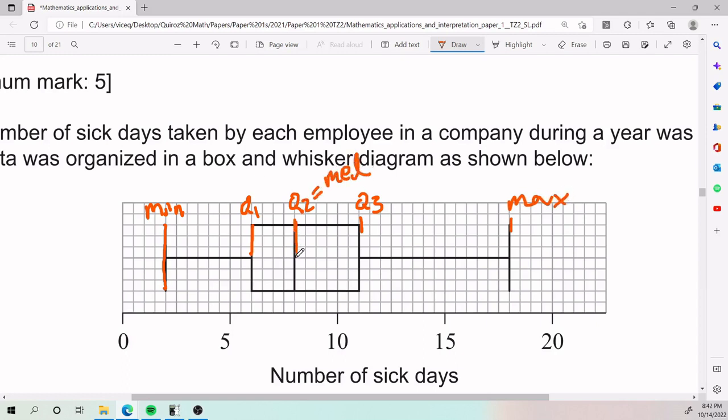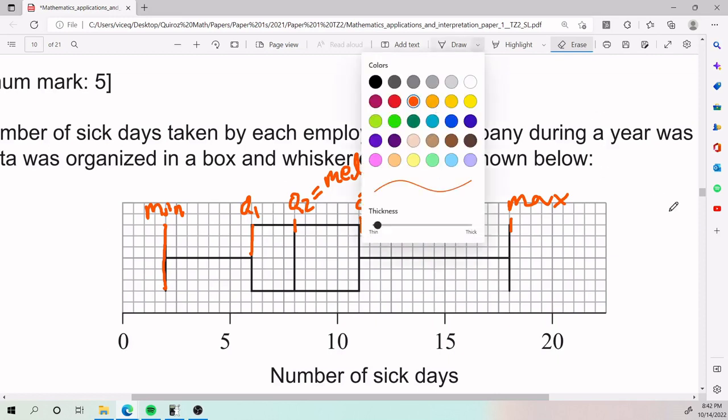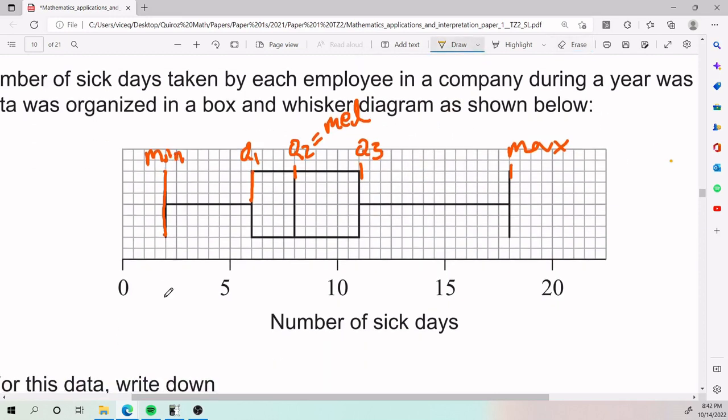Let's remember that my Q2 is the same as my median, so whatever cuts through the middle here is going to be my median. So that's minimum, Q1, Q2, Q3, and maximum.